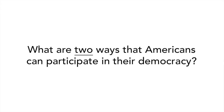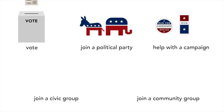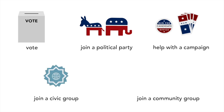What are two ways that Americans can participate in their democracy? Vote. Join a political party. Help with a campaign. Join a civic group. Join a community group.